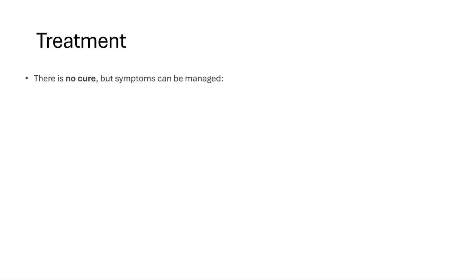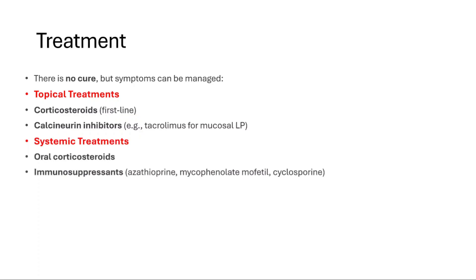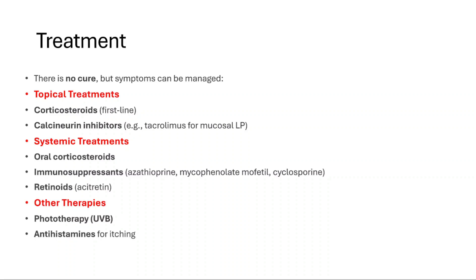Treatment is complicated because there is no cure, but symptoms can be managed. Topical treatments include corticosteroids as first line and calcineurin inhibitors. Systemic treatments include oral corticosteroids, immunosuppressants, and retinoids. Other therapies include UVB phototherapy and antihistamines for itching.